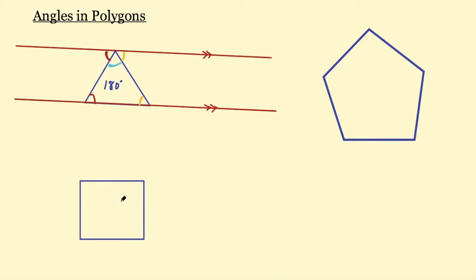You also probably know that angles in a quadrilateral, or a four-sided shape, add up to 360. What about angles inside a pentagon? You might know what they add up to, but let's prove this using the idea that angles in a triangle add up to 180 degrees.